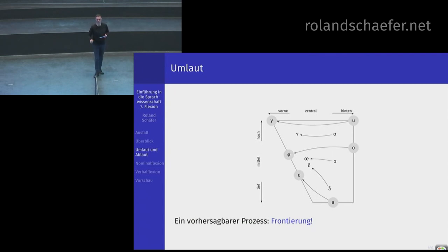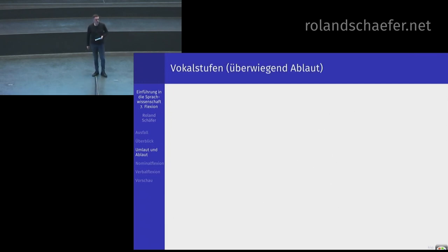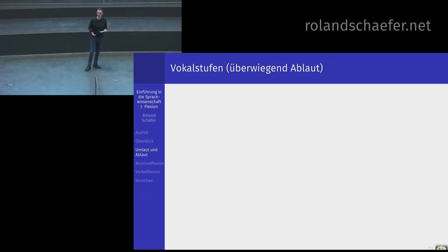Beim E gibt es keinen Umlautvokal – E können Sie nicht umlauten. Das ist Umlaut – schon relativ einfach. Es ist ein schöner, morphologisch bedingter Prozess: Umlaut passiert immer bei bestimmten morphologischen Prozessen, bei Pluralen, bei Komparativen, bei manchen Verbformen wird umgelautet. Das hat sich historisch so entwickelt und kann so einfach schön phonologisch beschrieben werden, auch wenn es morphologisch motiviert ist.